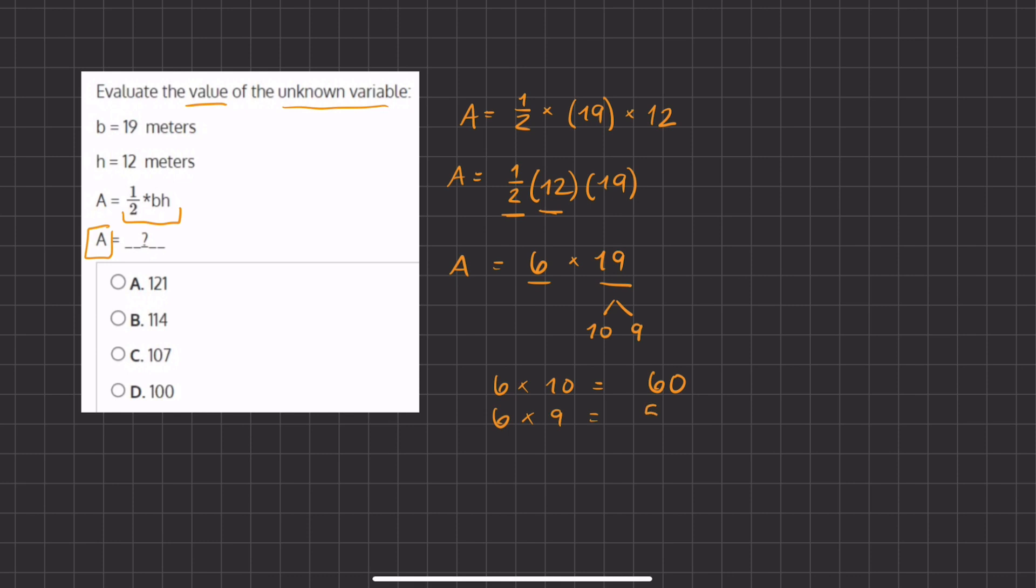So 6 times 10 gives us 60 and 6 times 9 gives us 54. And now when we add these two numbers we get 114, which is the multiplication of 6 times 19, which is also the value of A, which is going to be answer B in this problem.